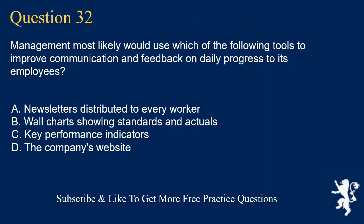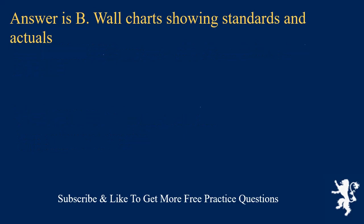Question 32. Management most likely would use which of the following tools to improve communication and feedback on daily progress to its employees? A. Newsletters distributed to every worker. B. Wall charts showing standards and actuals. C. Key performance indicators. D. The company's website. Answer is B. Wall charts showing standards and actuals.